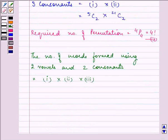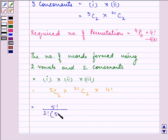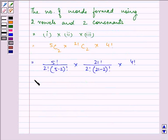That is 5C2 multiplied by 21C2 multiplied by 4 factorial. This equals 5 factorial divided by 2 factorial times (5 minus 2) factorial, multiplied by 21 factorial divided by 2 factorial times (21 minus 2) factorial, multiplied by 4 factorial.